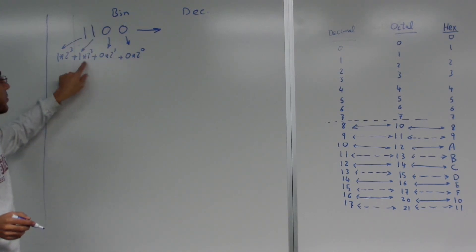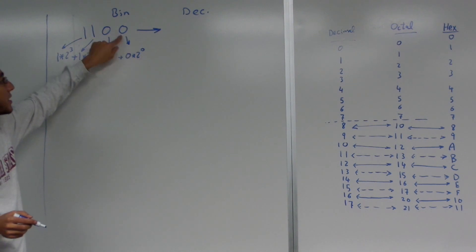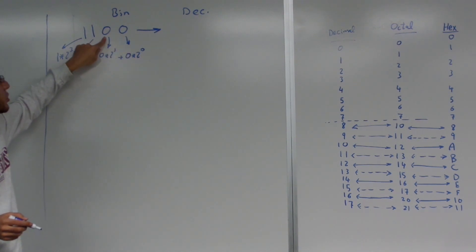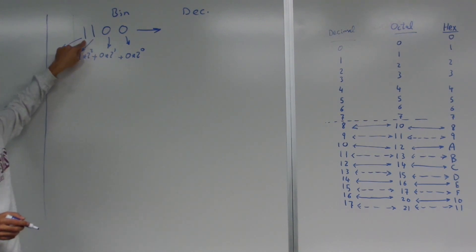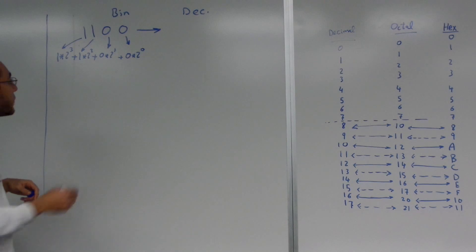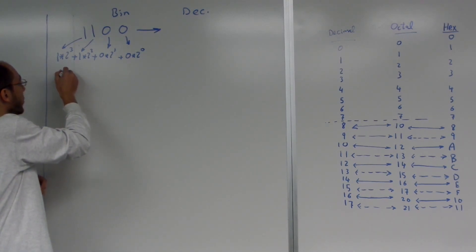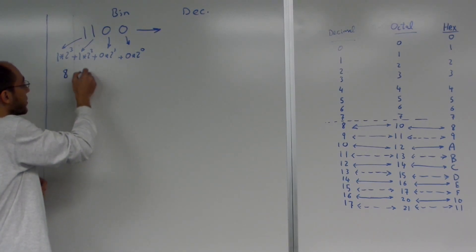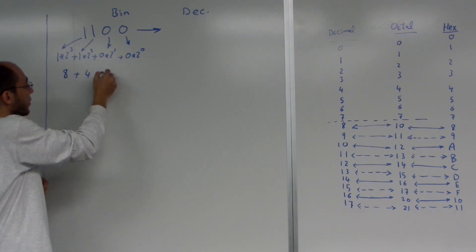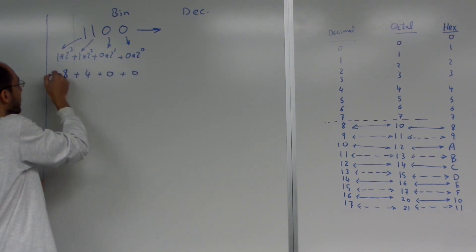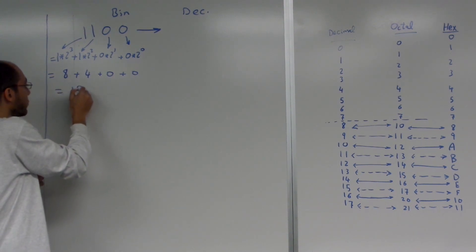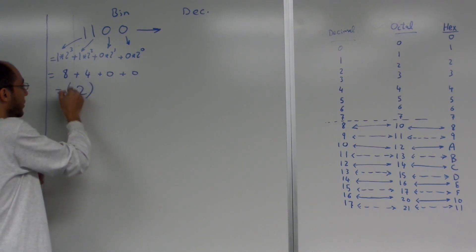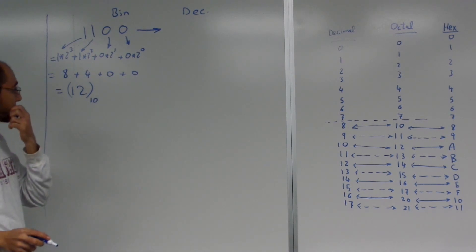Where did I get these twos from? Two to the power zero because that's in the zeroth position, the first position, the second position, and the third position. So if you do this math, you'll find that two to the power three is eight, plus two to the power two is four, plus zero, plus zero, which is equal to twelve in decimal.